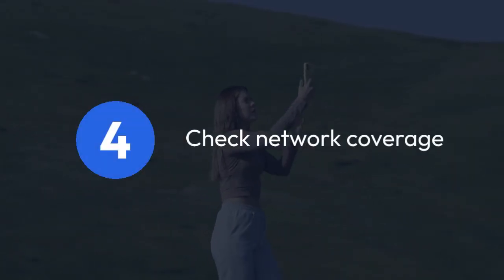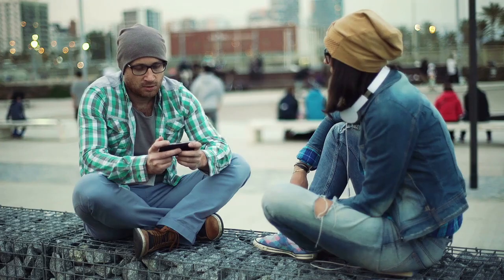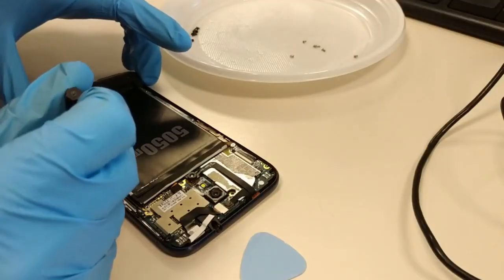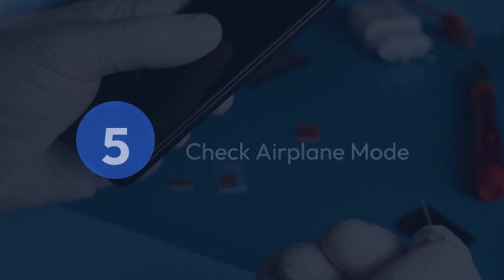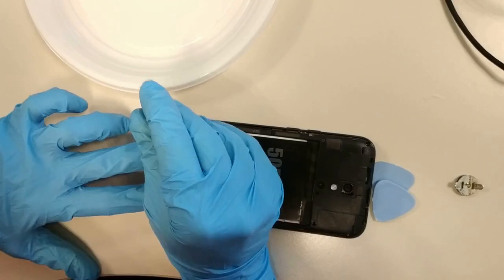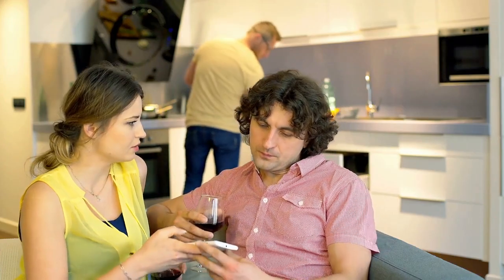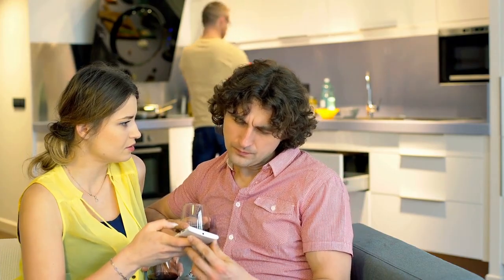4. Check network coverage. Poor or no network signal can prevent the SIM toolkit from working correctly. Try moving to a location with better reception. 5. Check airplane mode. Toggle airplane mode on and off. This forces your phone to reconnect to the network and can sometimes resolve connection problems.